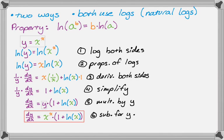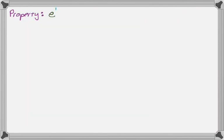There's actually another method we can use that's really similar but uses a different property. This property is that e to the natural log of x is equal to x. Some people find this really surprising, but e to the x and natural log of x are actually just inverses of each other, so it makes sense that you'd get x from that.